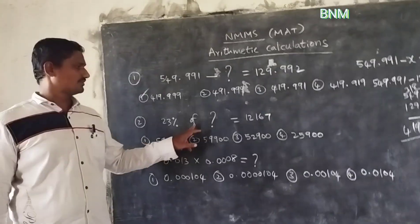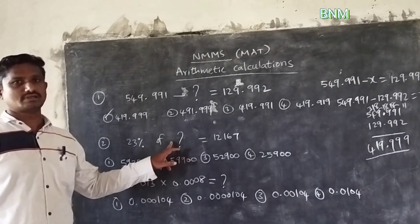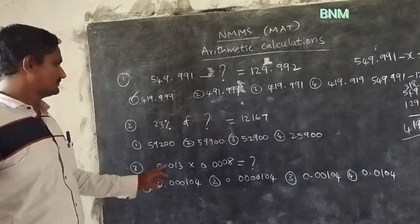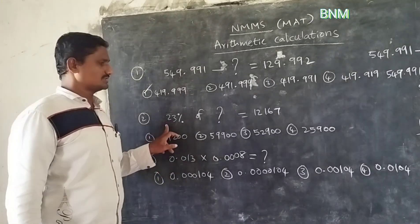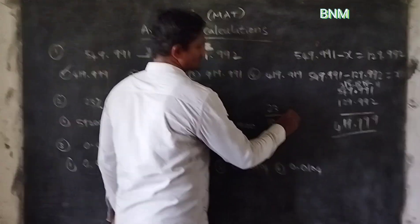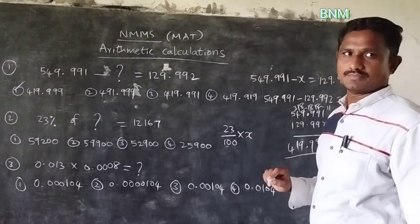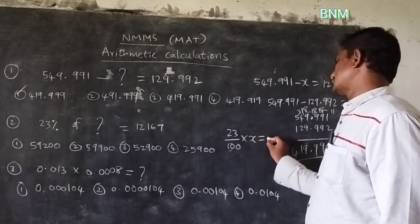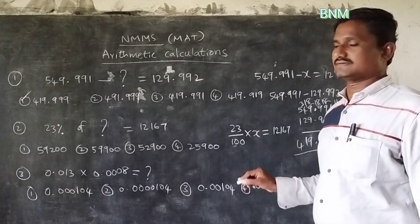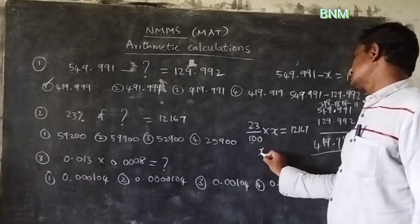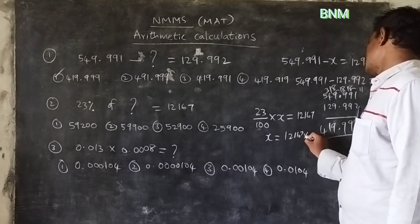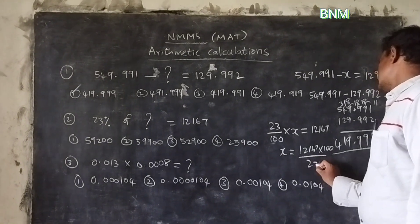23 percent of a number x. The sum equals x. The number is 2167. Now 23 percent of the number gives 2167 — so x is 2167. To find the original number, we reverse the operation: multiply by 100 divided by 23.